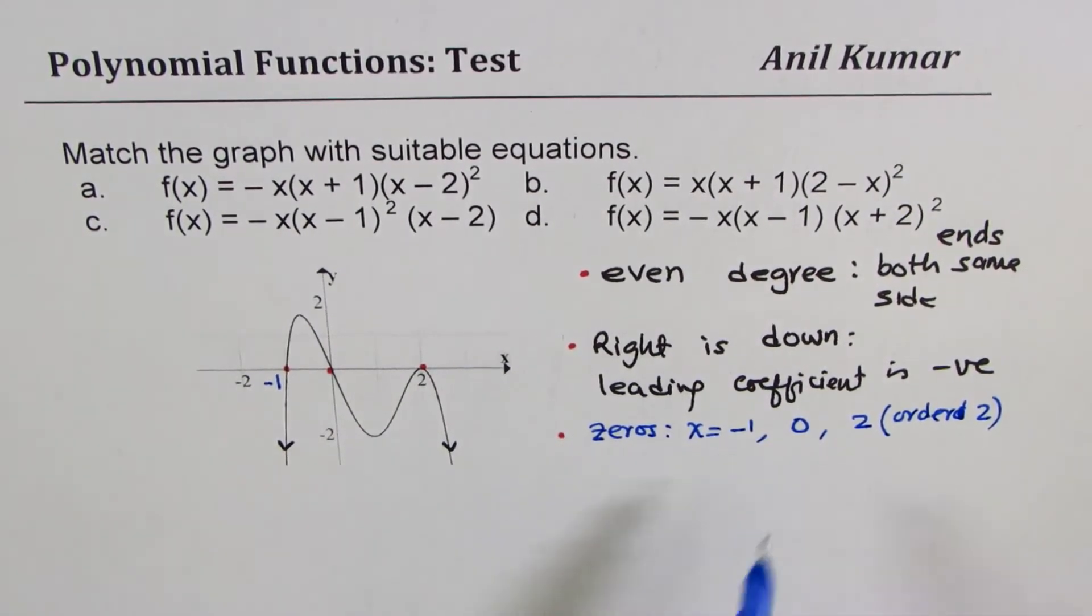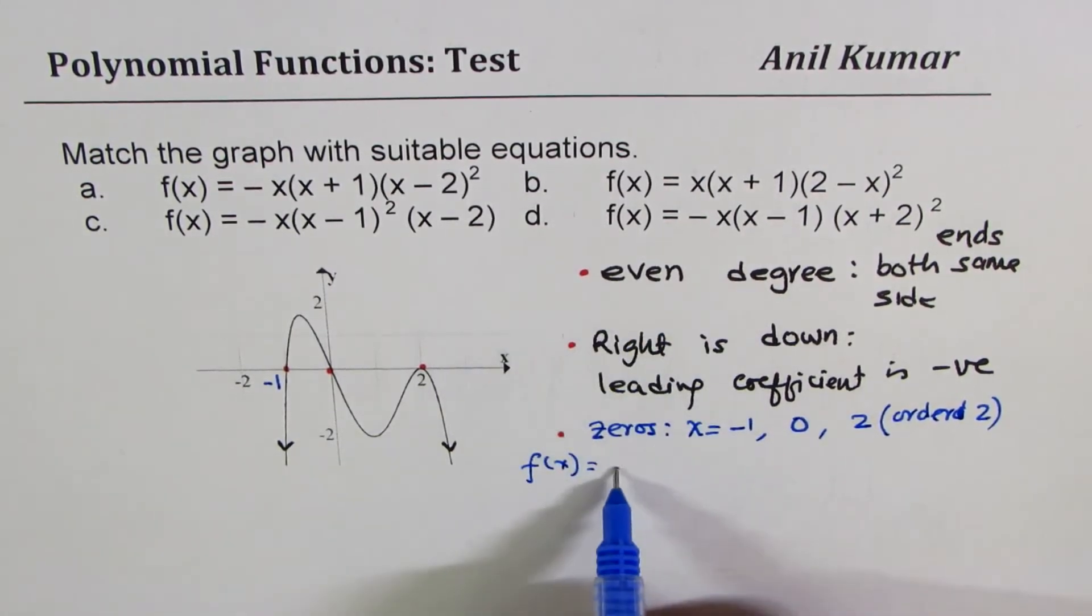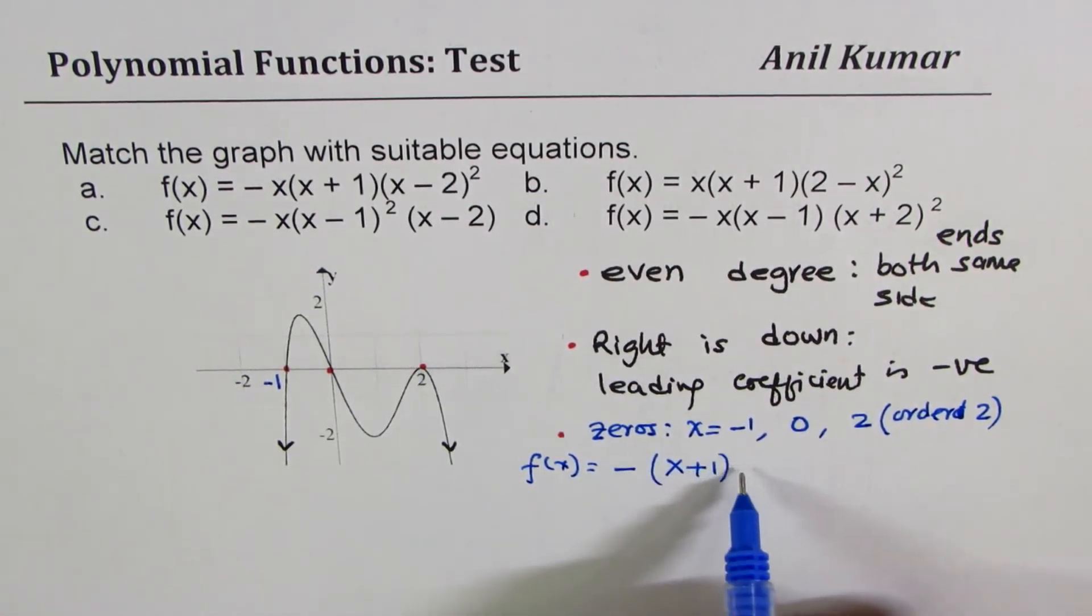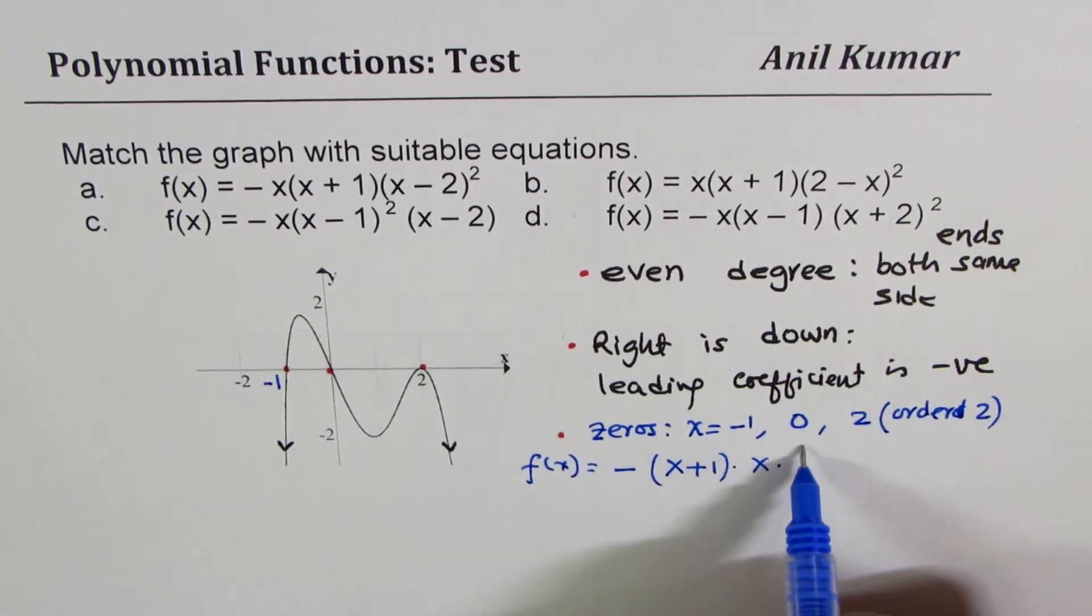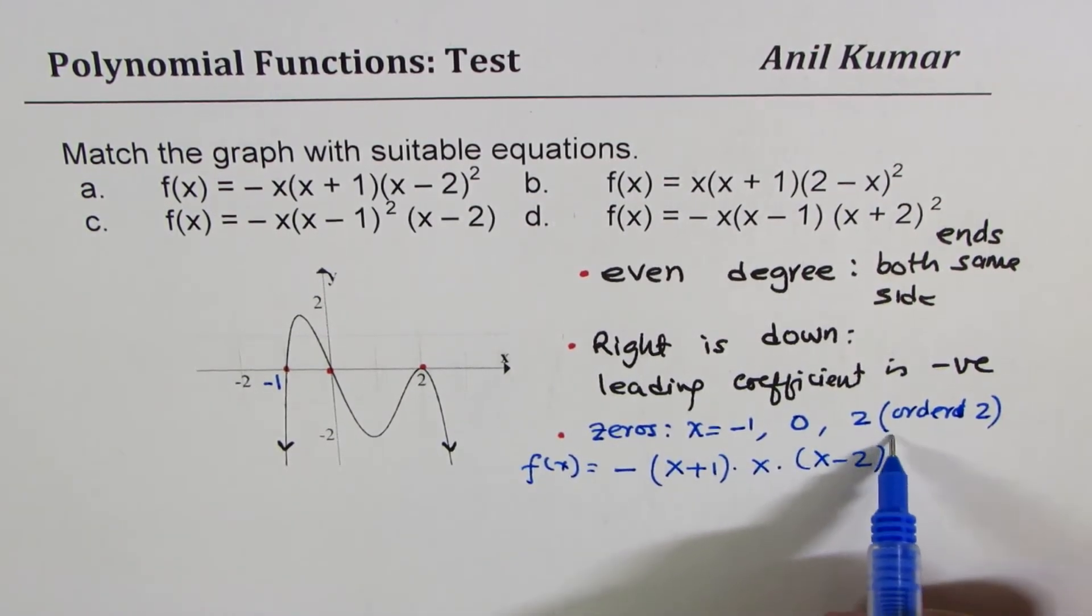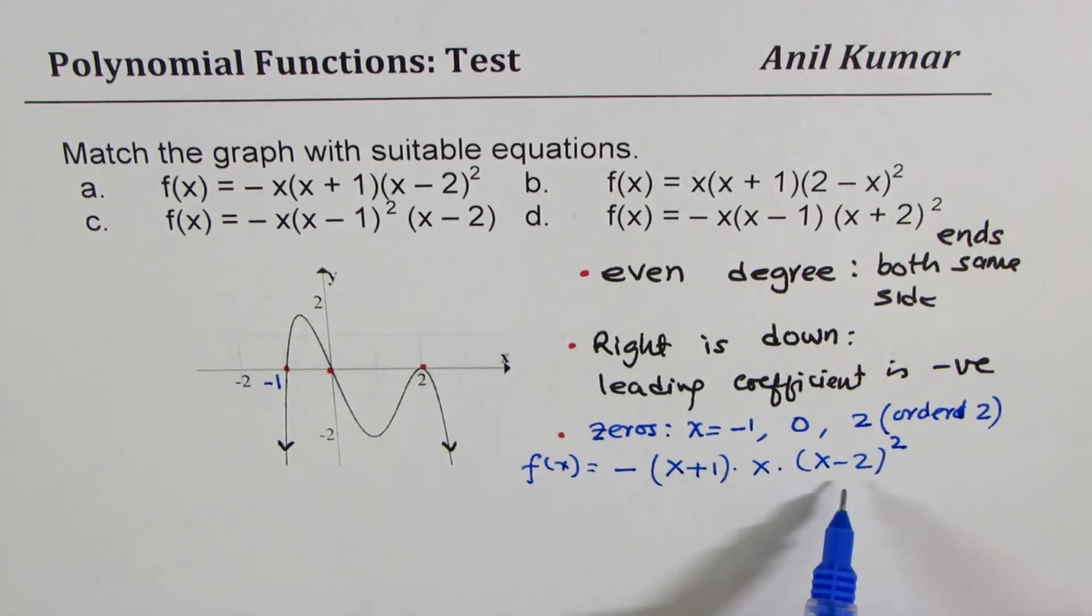So that gives you the equation. So our function f(x) could be equal to negative. These are the zeros. That means (x+1) times x times (x-2). The order is two. So that becomes square. So that is the equation which we are trying to match.